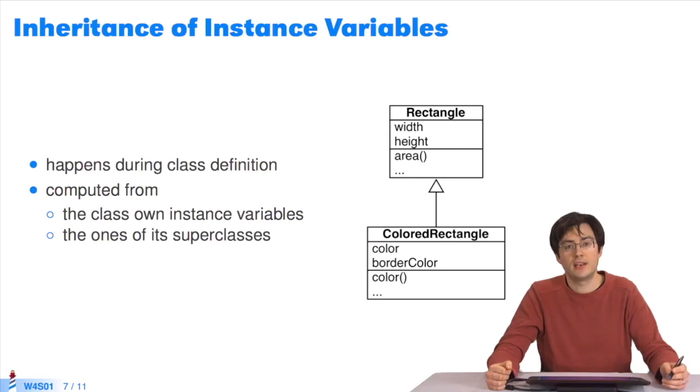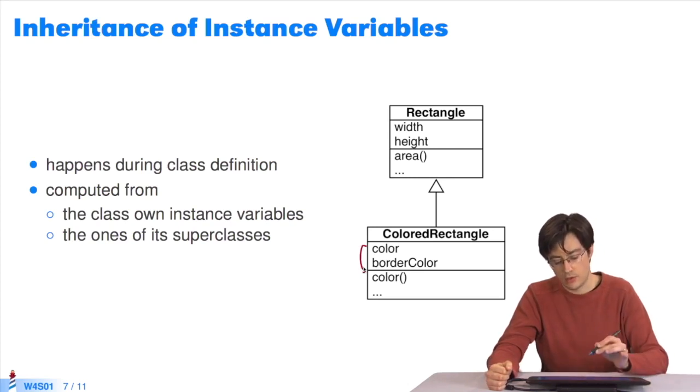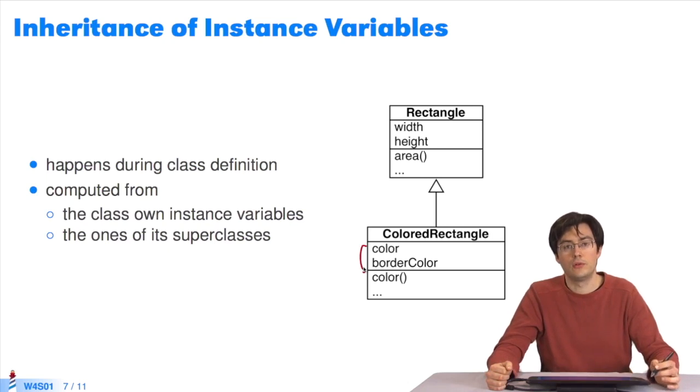Concerning instance variables, inheritance happens during class definition. When you define the subclass, you take the instance variables defined in the subclass. Here, they are color and border color.